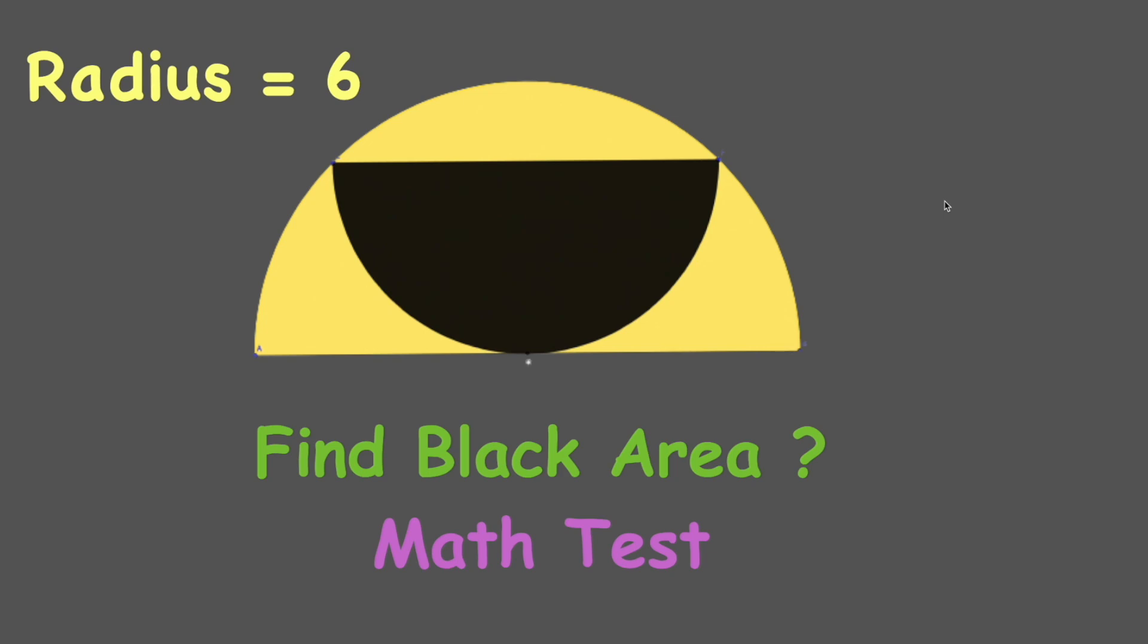Welcome back! The problem today is very easy if you're good at geometry. We have to find the black area in this semicircle. The black area is also a semicircle. Let's get started. First of all, the radius of the yellow semicircle is 6.